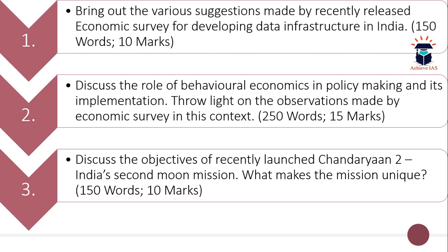The word limit for the second question is 250 and the maximum marks are 15. The third question is: discuss the objectives of the recently launched Chandrayaan 2, India's second moon mission, and what makes the mission unique. You have to discuss both the objectives of Chandrayaan 2 and what makes this mission unique.